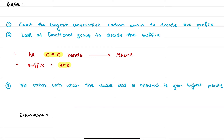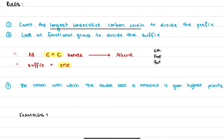For the root words: 'meth' is not possible for alkenes because you can't have a double bond in a single carbon. So we start with 'eth', then 'prop', then 'but'. These prefixes indicate how many carbons are in the longest carbon chain. If we end all of these with '-ene' — ethene, propene, butene — this tells us there are CC double bonds in the molecule.